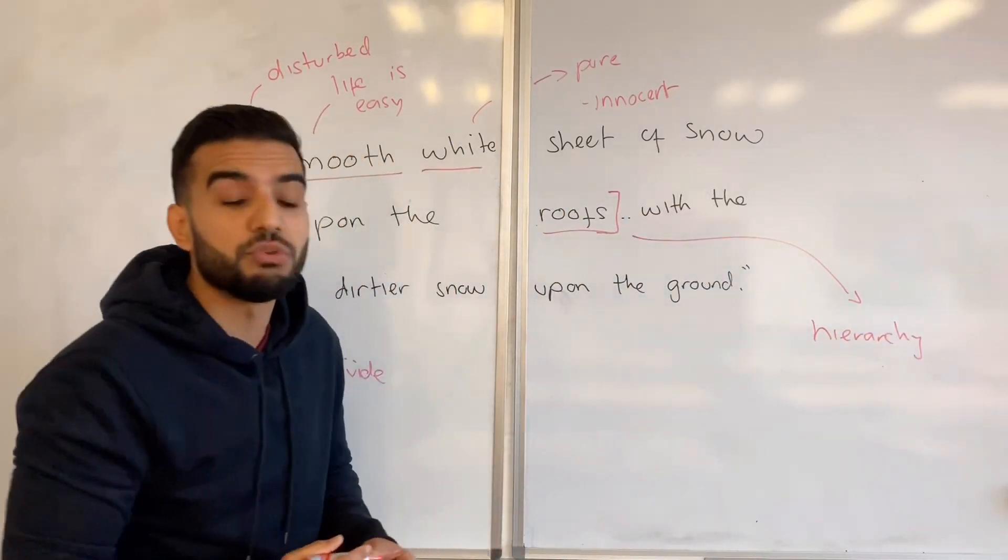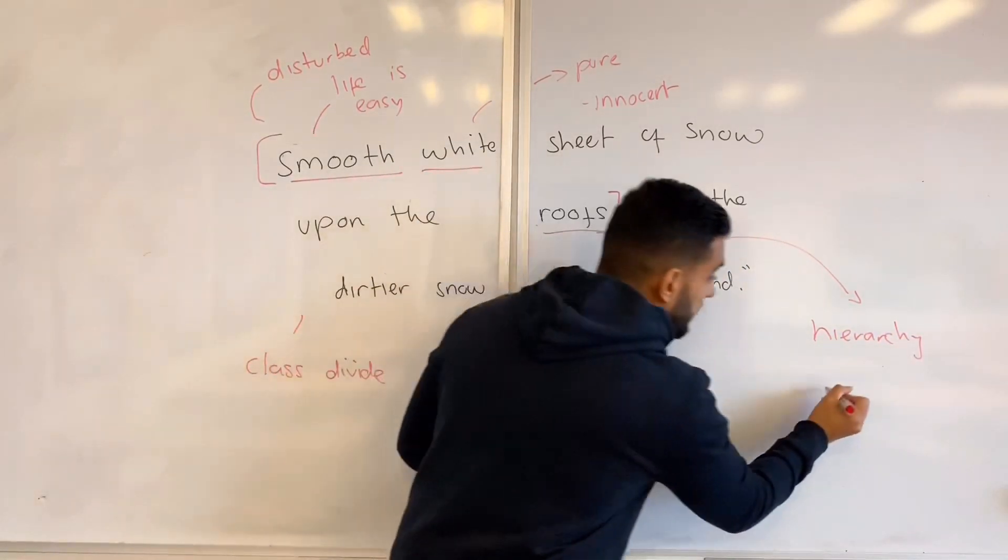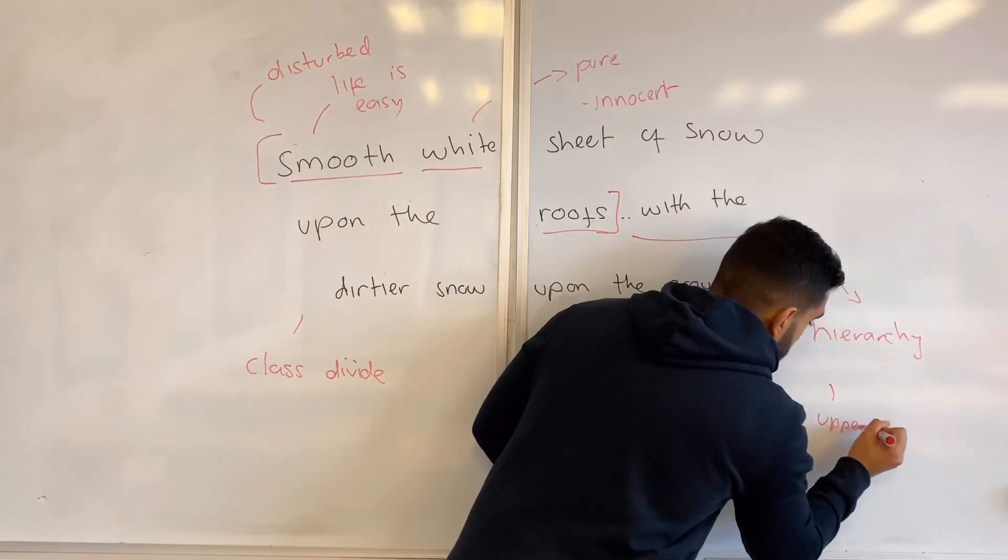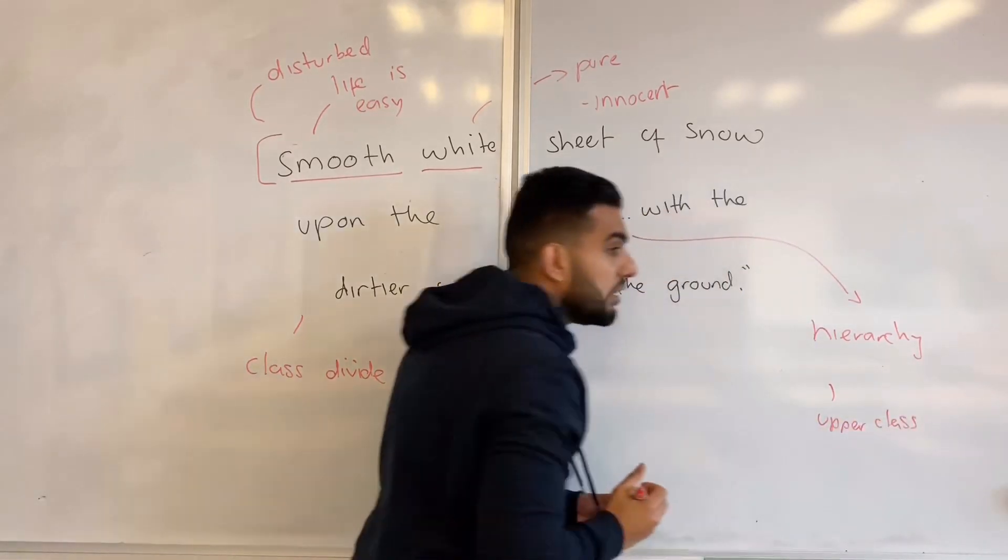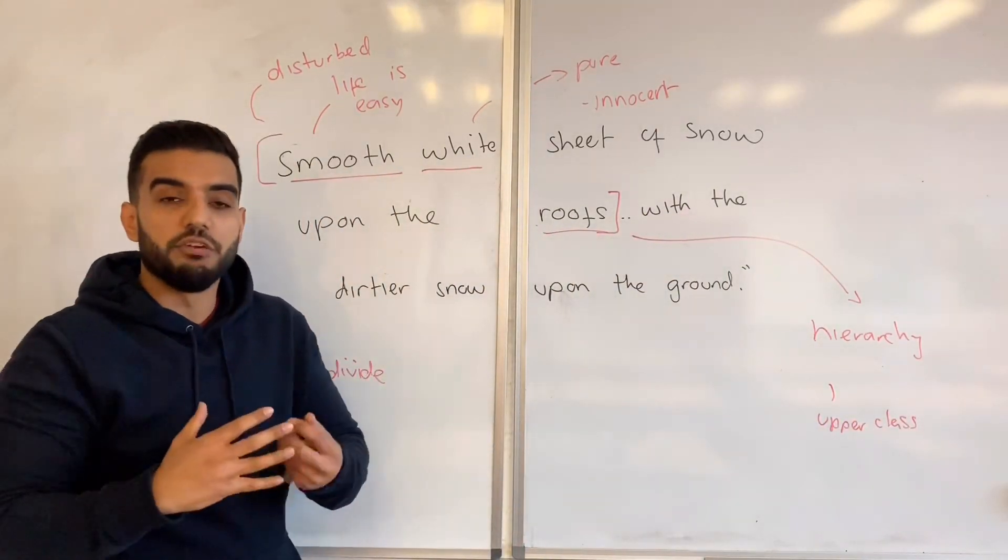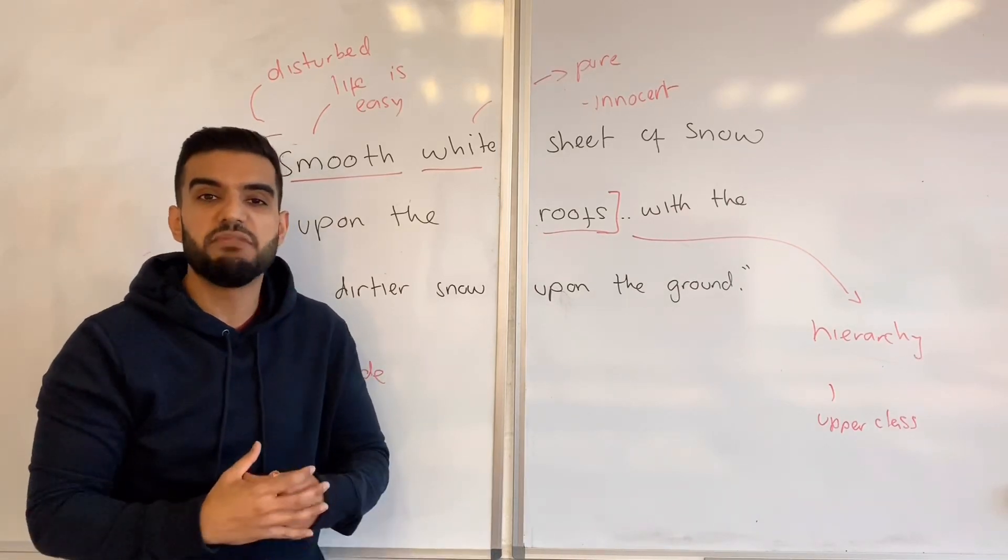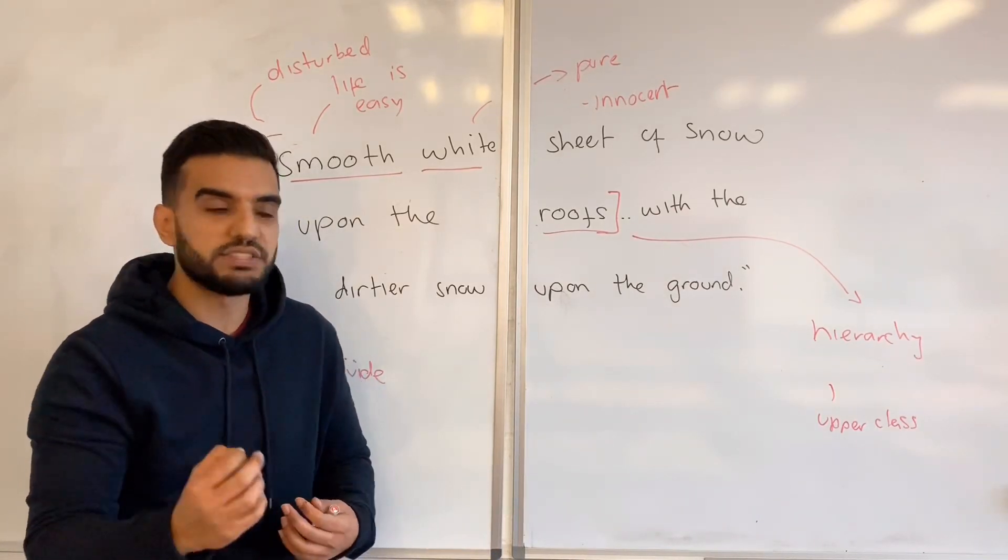Therefore this snow symbolizes the upper class. The upper class in A Christmas Carol are very relaxed, untouched. They live a life of luxury.